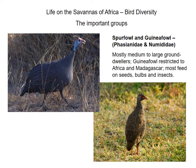There are also a range of spurfowl and guineafowl, or game birds, in Africa's savannah habitats. These are generally medium to large ground birds. The helmeted guineafowl is restricted to Africa and Madagascar. These birds generally feed on seeds, bulbs, and insects, and are very obvious, quite vocal birds in the savannah.